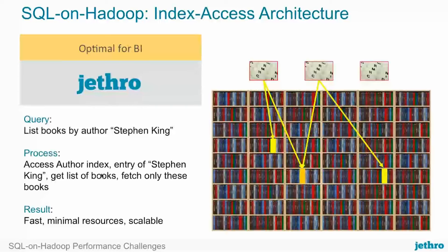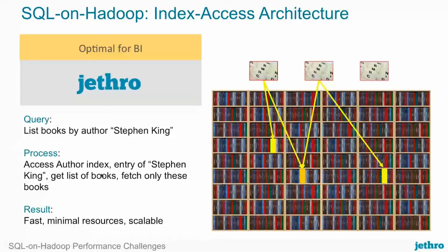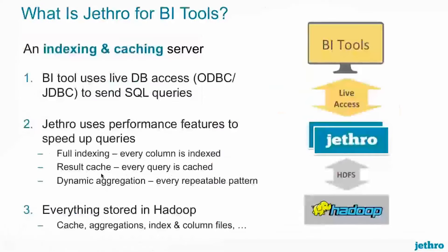Jethro is BI tool agnostic because we just need something that connects via ODBC or JDBC — Tableau, Qlik, MicroStrategy, Power BI, Cognos. We have use cases with all these different BI tools. When we get a query, we use one of three different features to return that information: full indexing, result caching, and dynamic aggregations. Every single column in our columnar storage gets an index to help with the processing of queries. We'll get into the result caching and dynamic aggregations in more depth in the next few slides.